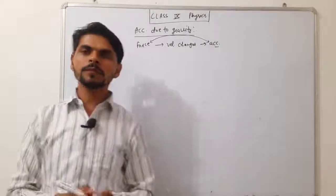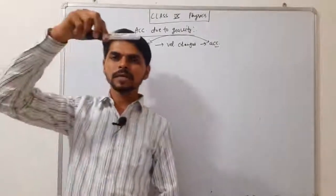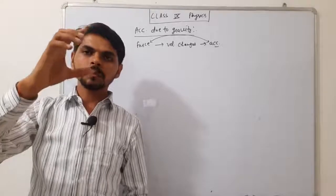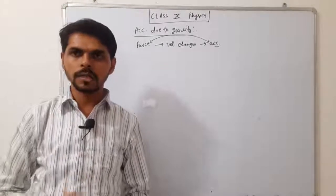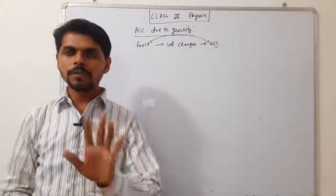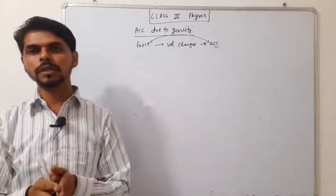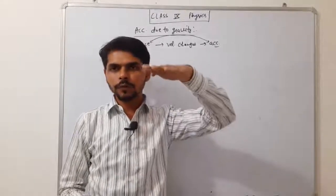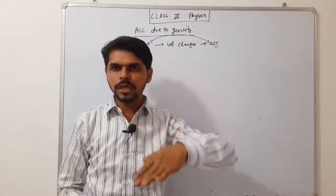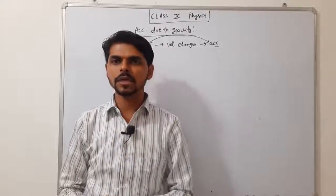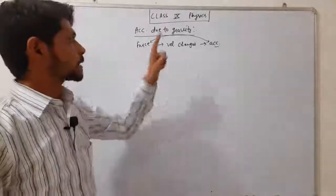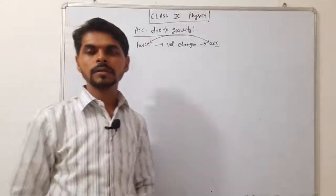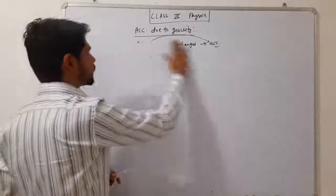तो अभी हमने जो free fall पढ़ा था — free fall में gravitational force लग रही है इस marker के ऊपर, pen के ऊपर। मतलब इसके पर force लग रही है। और जिस body के पर force लगती है, उसमें acceleration आएगी। इसका मतलब जो भी body free fall में नीचे गिर रही है, पृथ्वी की तरफ, उसमें भी एक acceleration आएगी। That acceleration is called acceleration due to gravity.